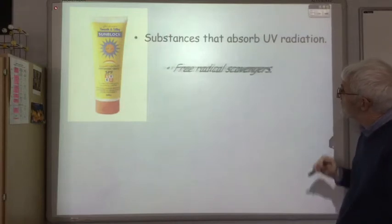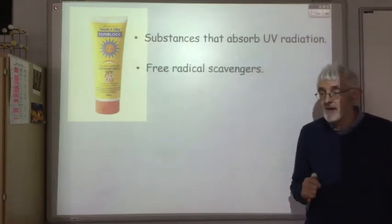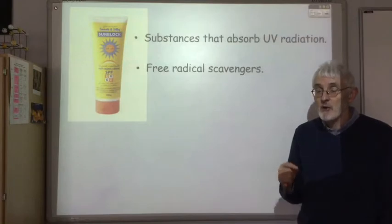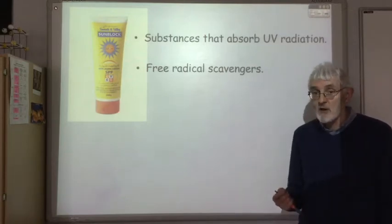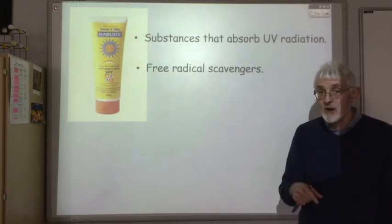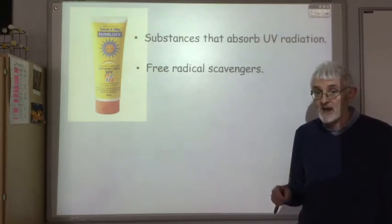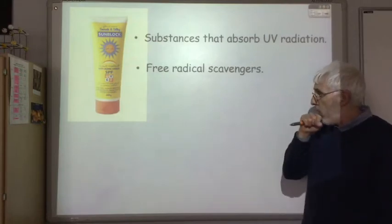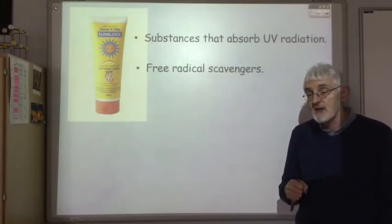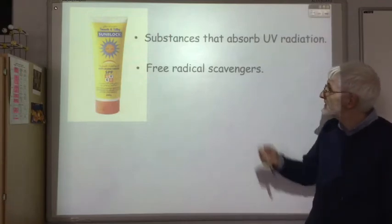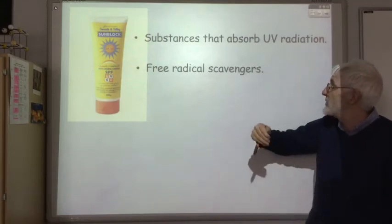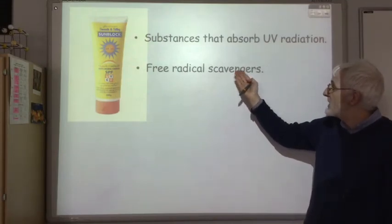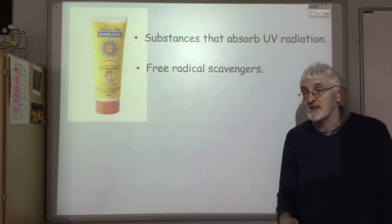And they also contain substances called free radical scavengers. This will minimize the damage caused once the ultraviolet radiation has caused the production of free radicals in your skin. So a free radical scavenger is a substance which will react with a free radical to produce a stable compound, hence reducing the number of free radicals and hence reducing the amount of damage that can be caused. So some of the UV radiation is absorbed by the sunblock, and that which gets through, the damage caused by it is minimized by the presence of free radical scavengers in the sun cream.